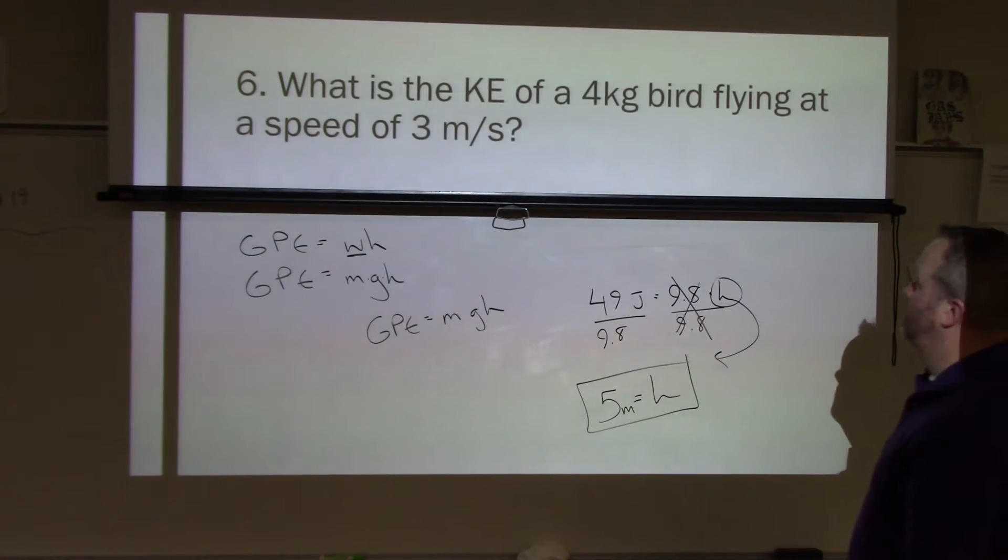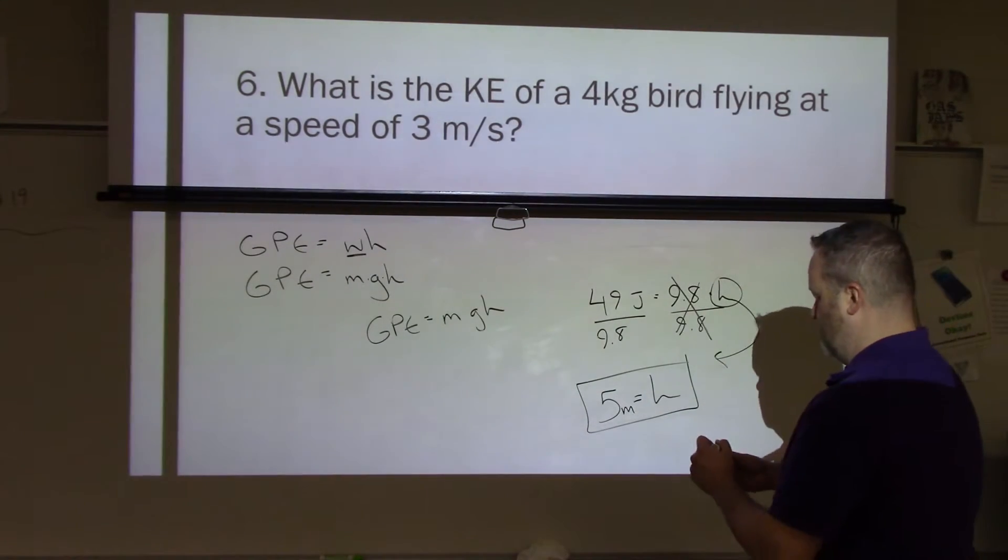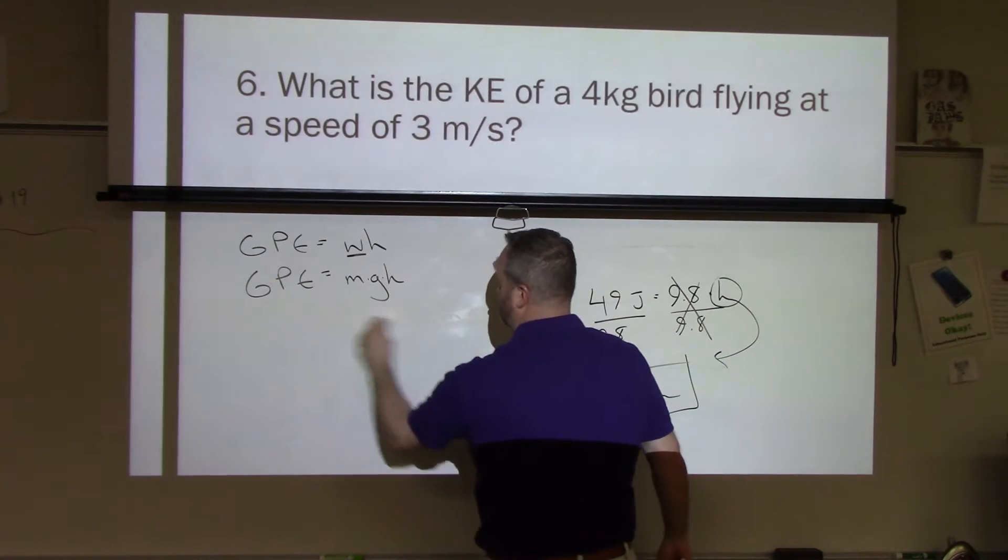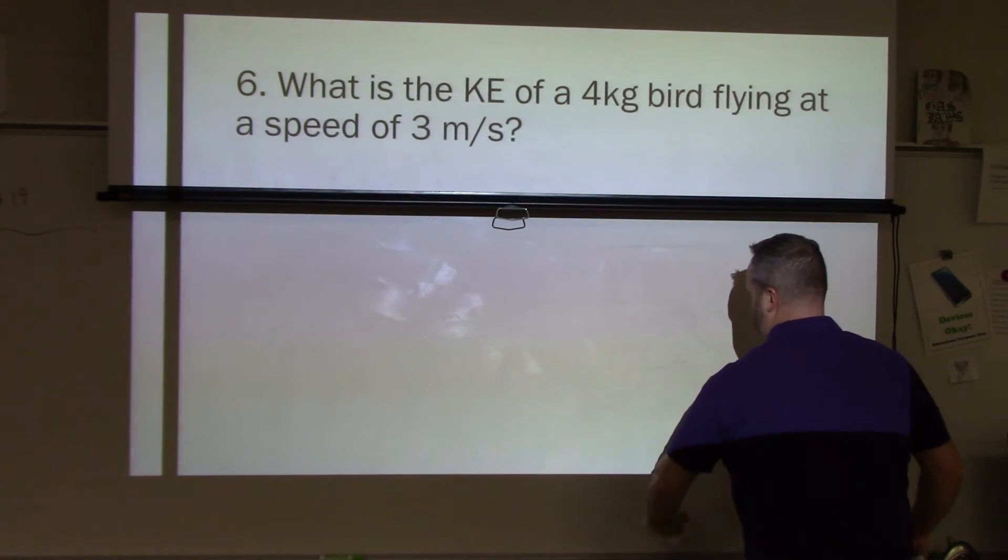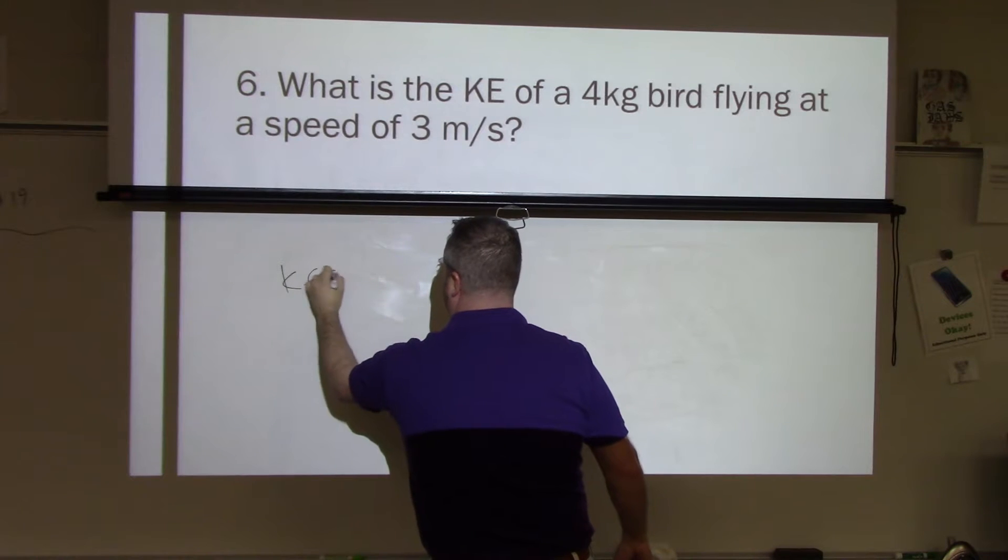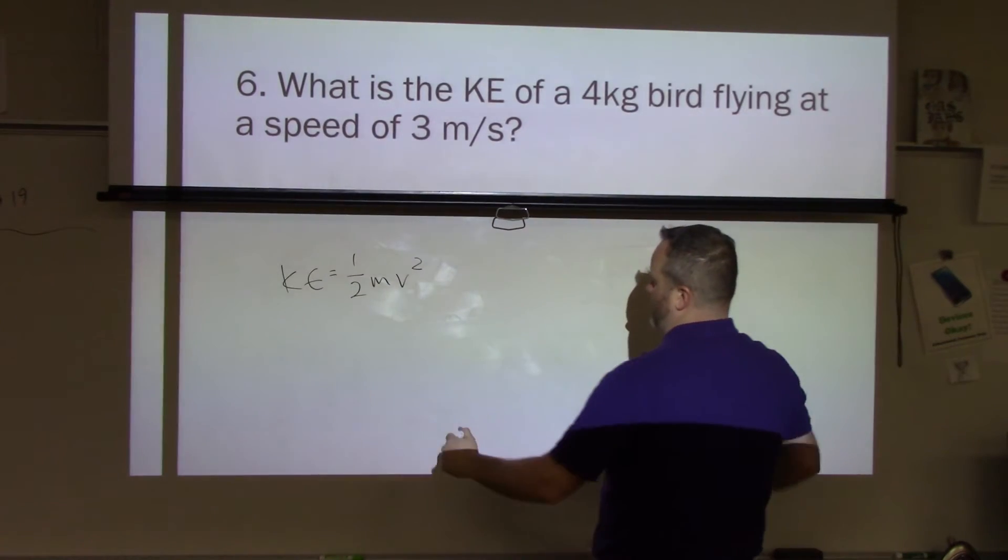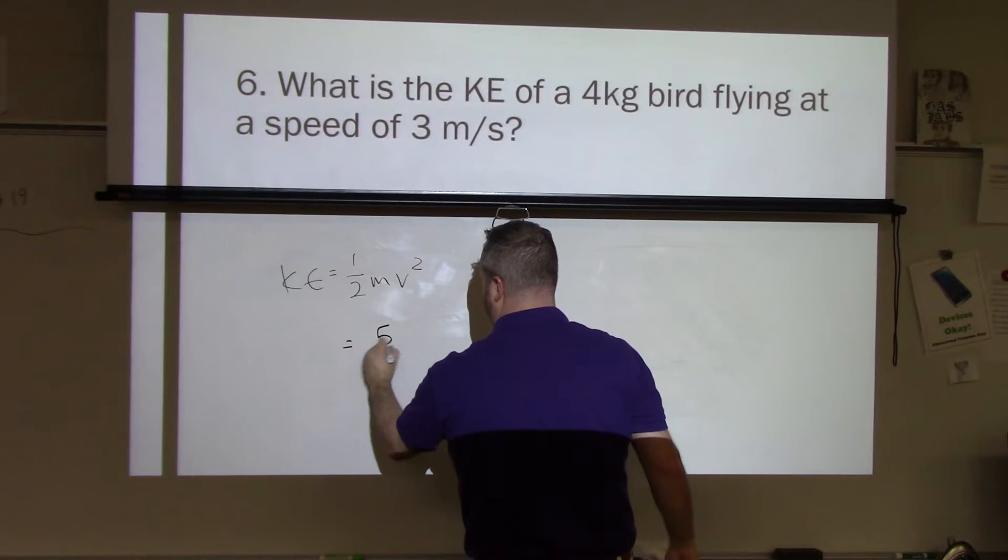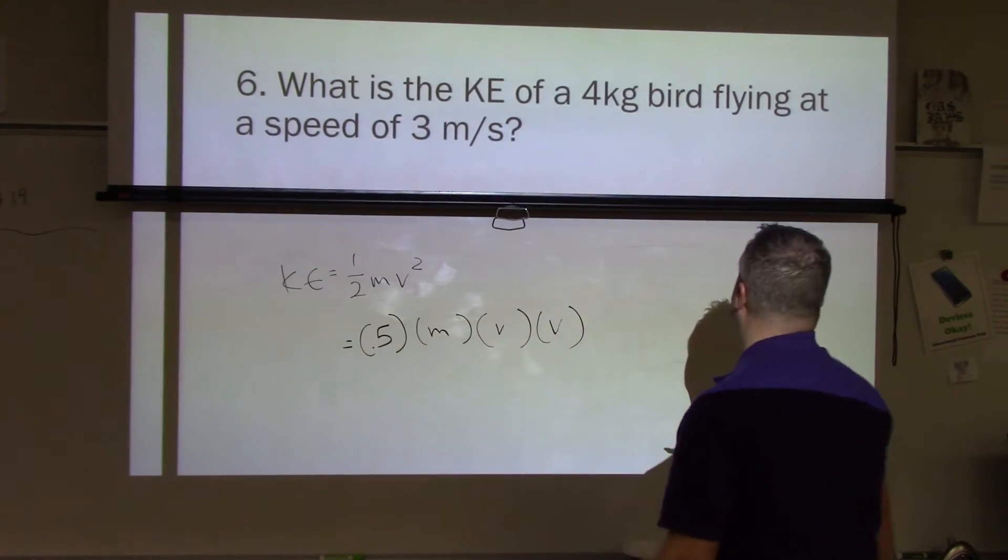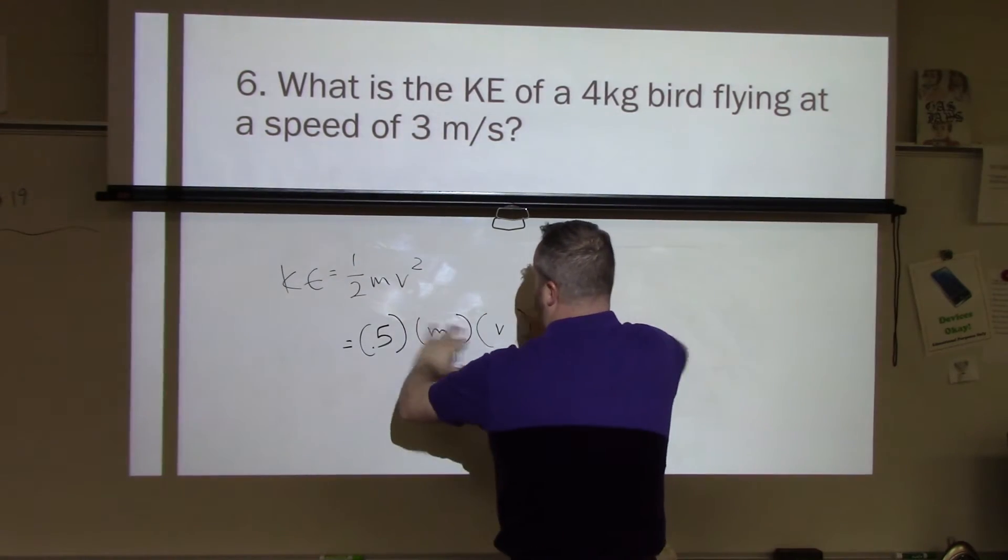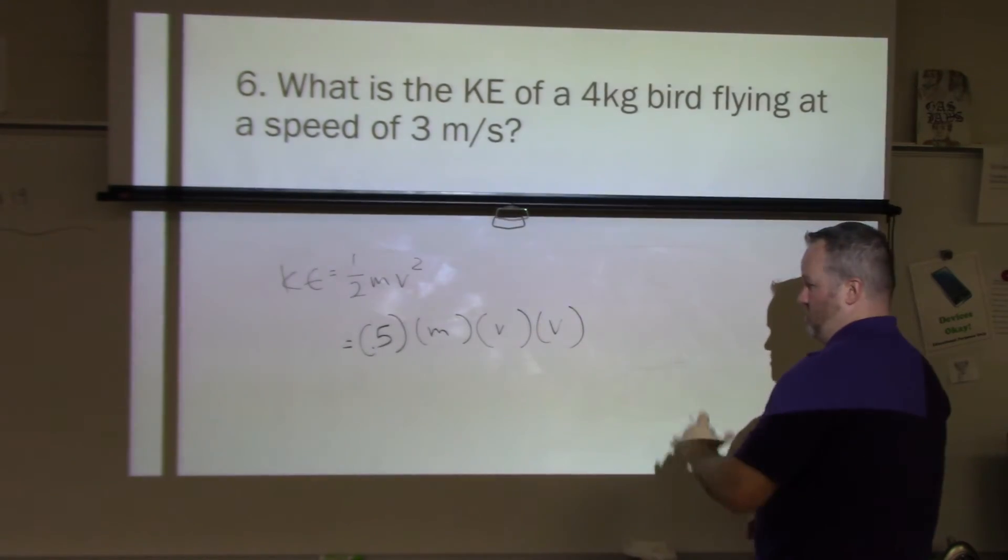Alright, number six. What is the kinetic energy of a 4 kilogram bird flying at a speed of 3 meters per second? Let's look at how we would solve that. So looking up here. Now that we're using kinetic energy. Kinetic energy, as you recall, is one-half mass velocity squared. So here, we're going to go ahead and replace those variables with what we know. Another way to write that is KE equals 0.5. That's one-half mass velocity velocity. So you're multiplying four things together. So these numbers right here, just before I write anything down, I want to make sure that everything is in SI units. I have kilograms and I have meters per second. That's very important. Before you do that, make sure you don't have to convert.